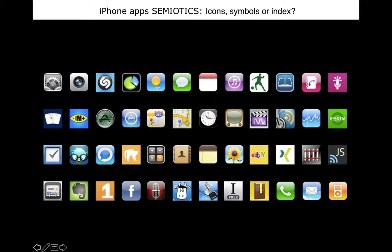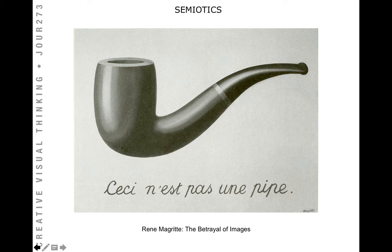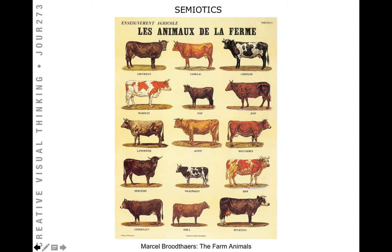Looking at iPhone apps — are they icons, symbols, index, or a combination of all three? I love this René Magritte poster that says 'This is not a pipe.' From a semiotic point of view, it's neither true nor false — it's not the physical reality of a pipe, it's a representation of a pipe. That is the signifier for pipe, but not the pipe itself. The viewer makes signs in their mind's eye, searching for an association between images and their label. A simple change in labeling can make a harmless figure take on a more sinister appearance.